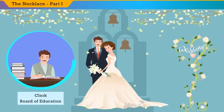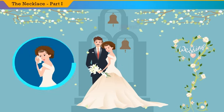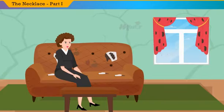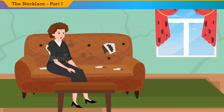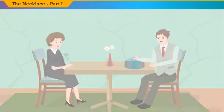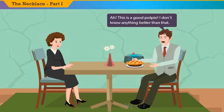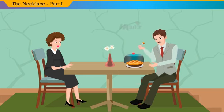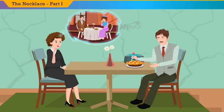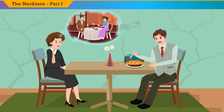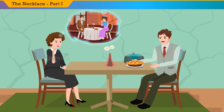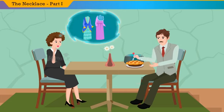Her husband worked in the office of the Board of Education. Mathilde was not contented as she had to marry a government clerk who received a stable salary. She loathed the poorness of her house. The shabby walls and battered benches added to the disgust, and she was deeply discontented with her simple life. As she sat down in front of her husband to have dinner, while Mr. Loiselle enjoyed the simple meal, she dreamt of elegant dinners. Her mind always lingered in the air of luxury, and she remained discontented, missing the simple and blissful moments of her daily life.